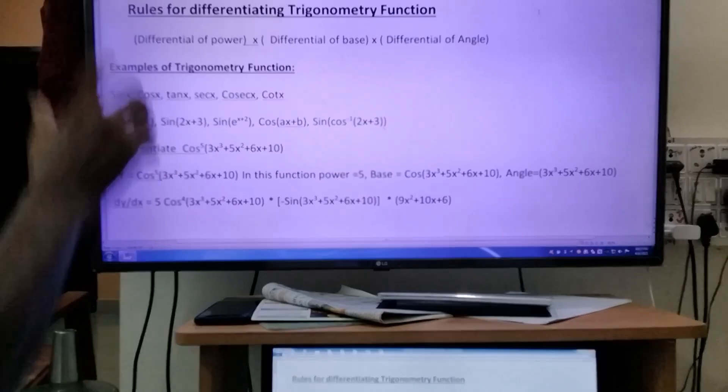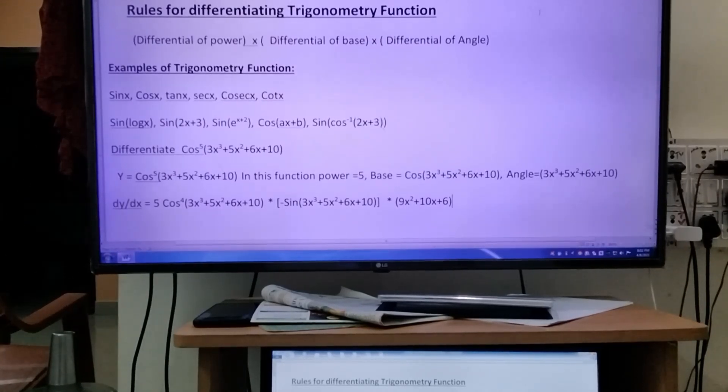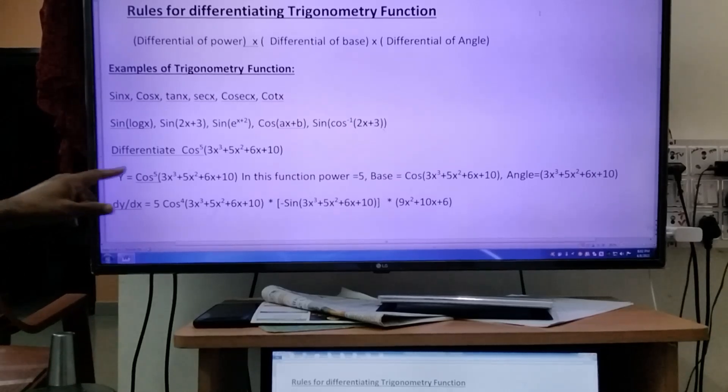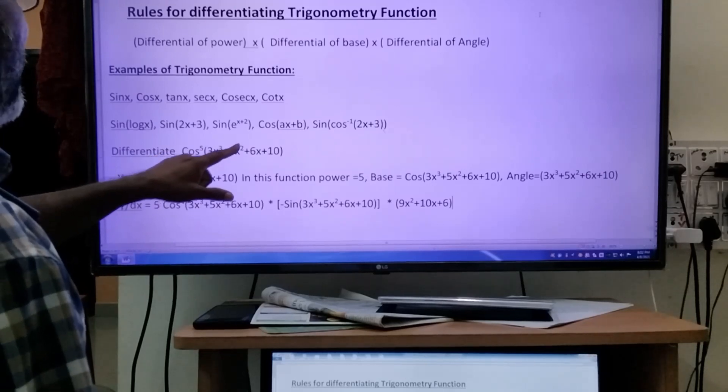Now I'll show how to differentiate cos to the power of 5 of (3x³ + 5x² + 6x + 10). Before solving this differential, you should know what is meant by power in this.